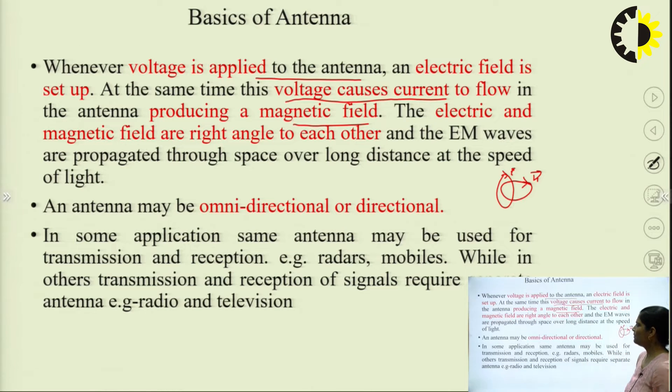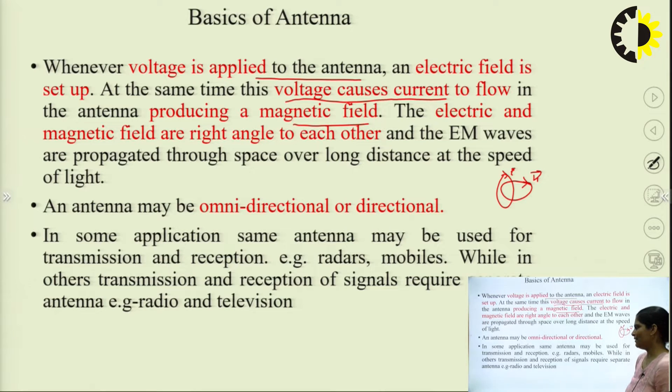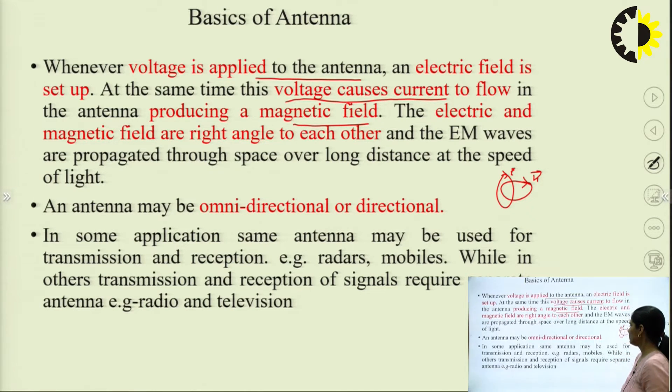An antenna may be an omnidirectional antenna, a directional antenna, or an isotropic antenna, but practically the isotropic antenna is not used.